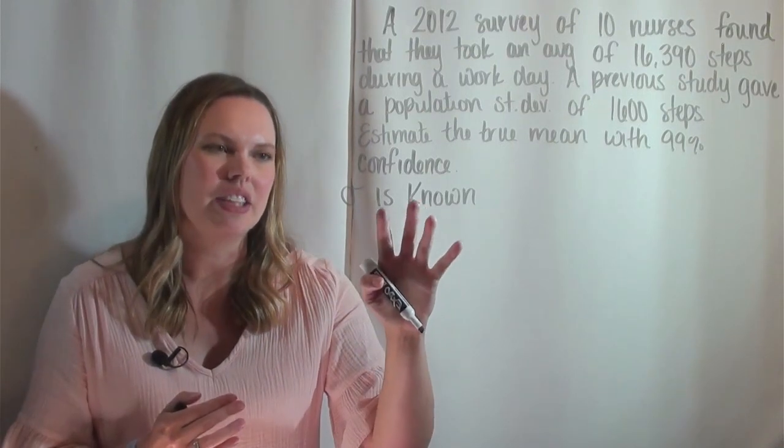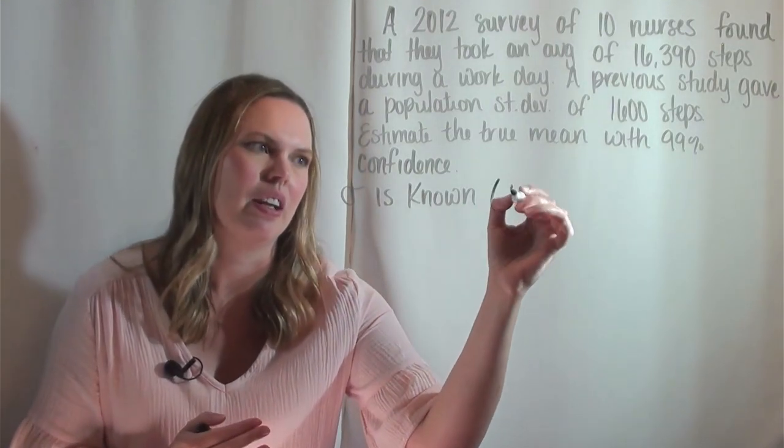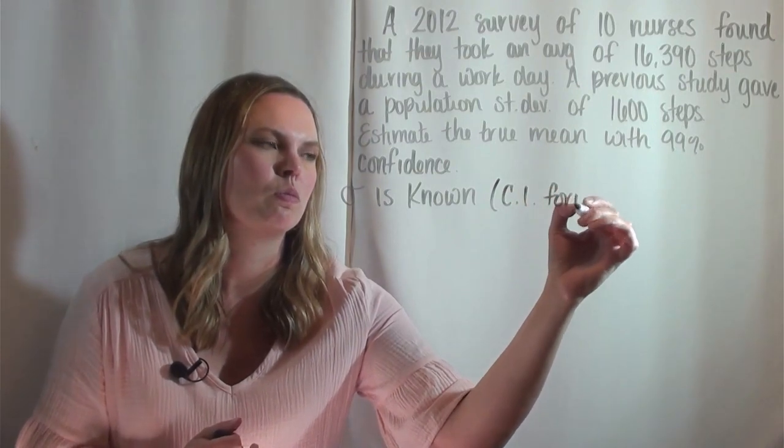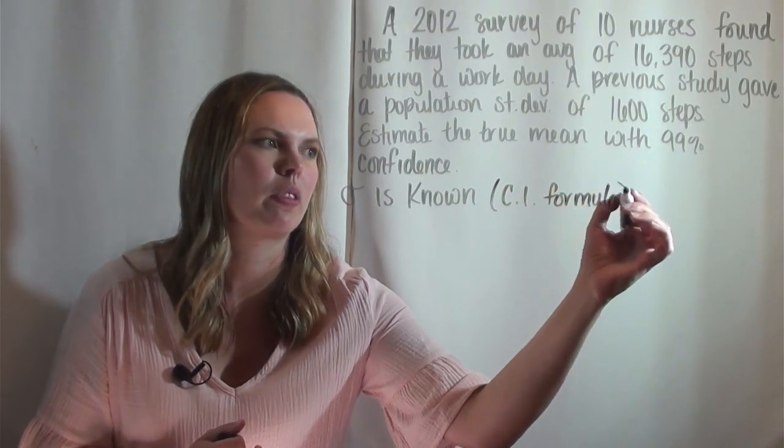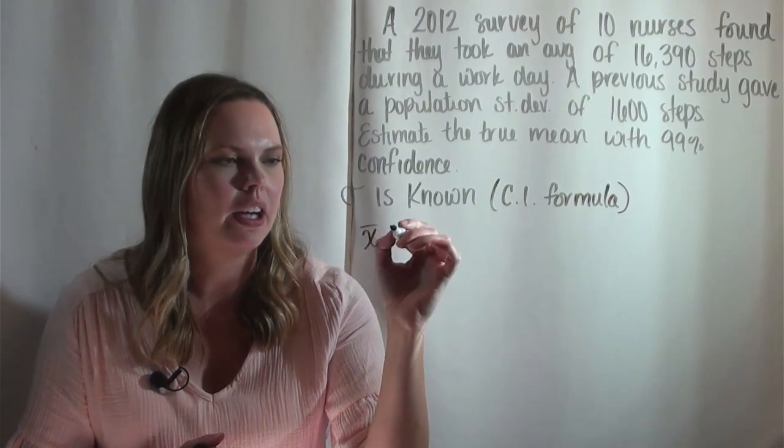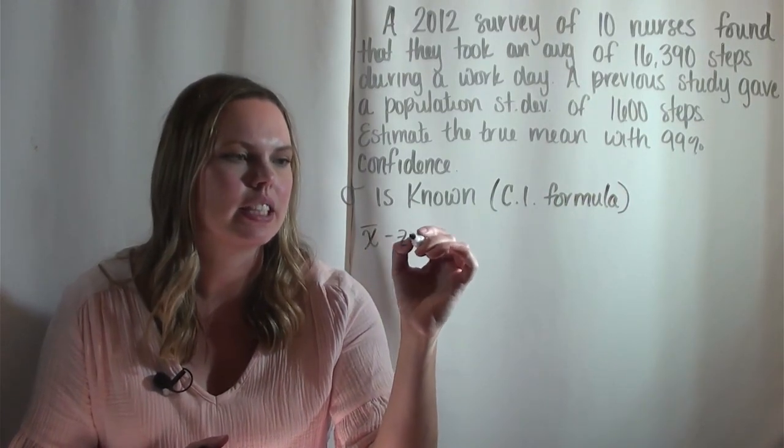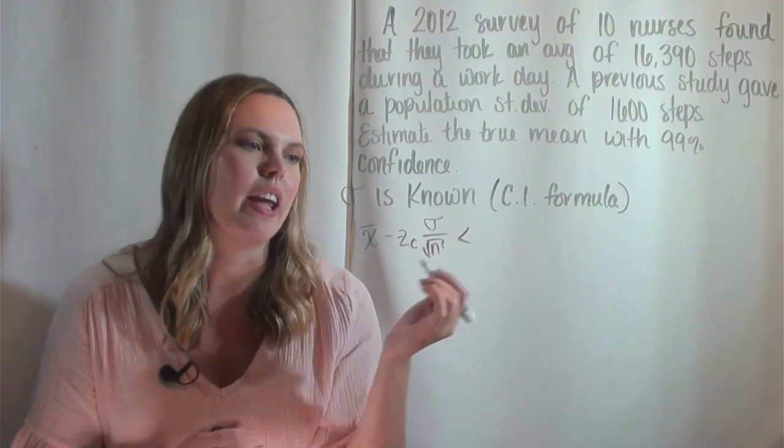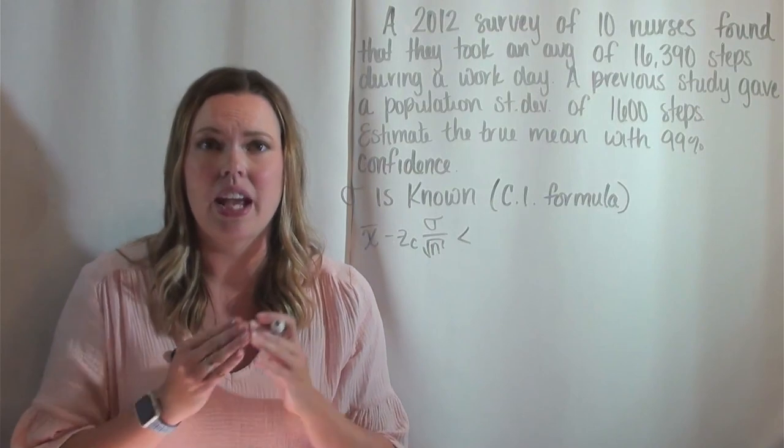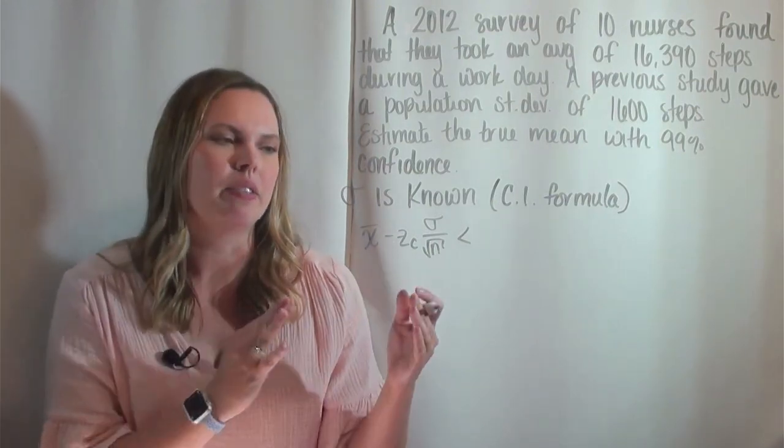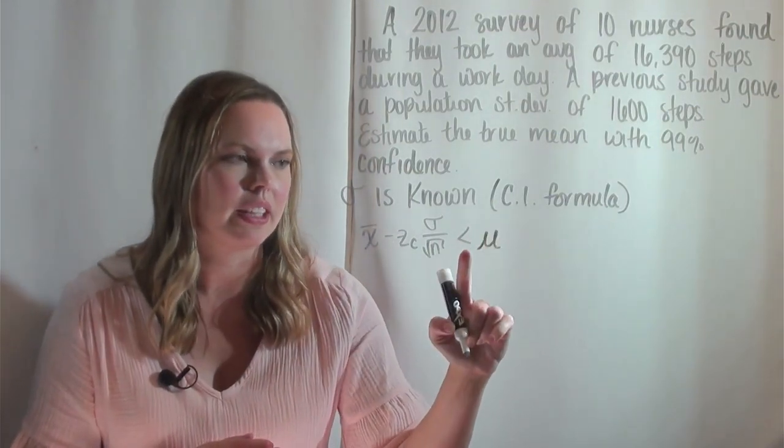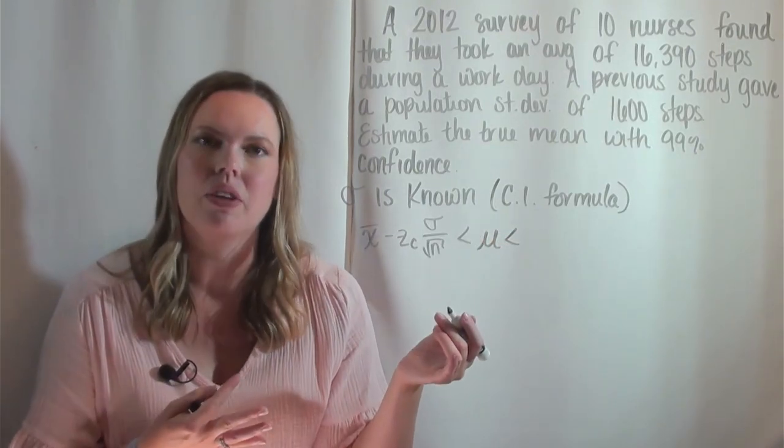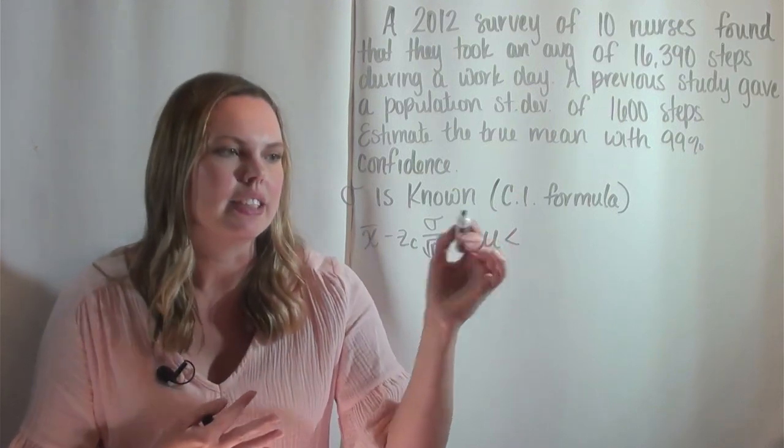So a confidence interval for when sigma is known, I'm going to give you that formula. CI for confidence interval is x̄ minus z_c times sigma over the square root of n. And this is an interval, so it has a lower boundary and an upper boundary. And sometimes you'll see this written in this manner where you're using less than signs to indicate that mu, our variable that we're looking for, that we're estimating here, is in between these.